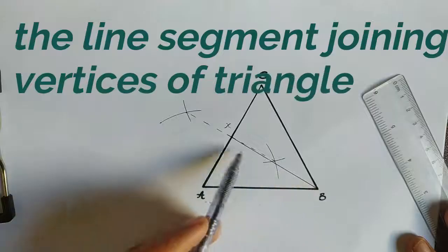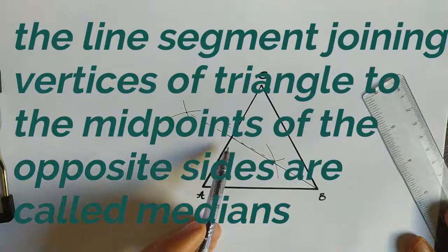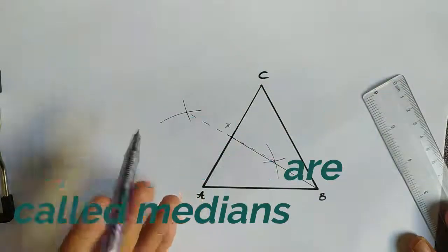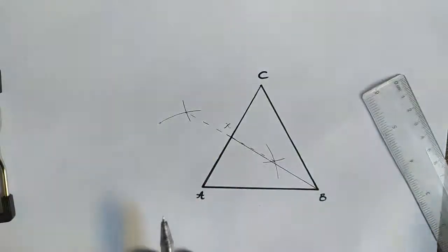The line segment joining the vertices of a triangle to the midpoint of the opposite sides are called medians of the triangle. That's it, this way you draw it.